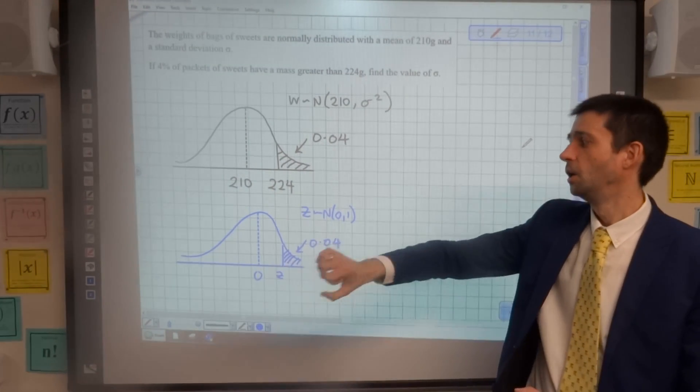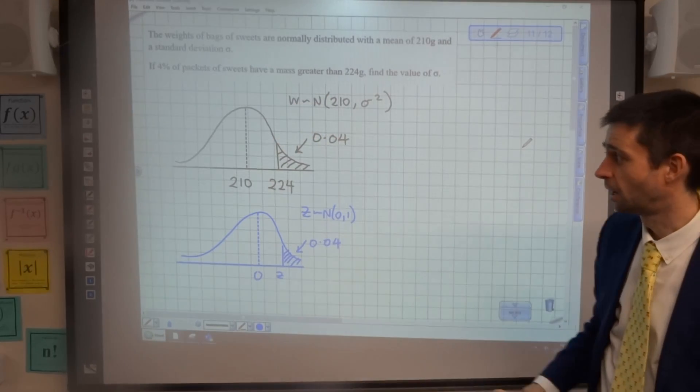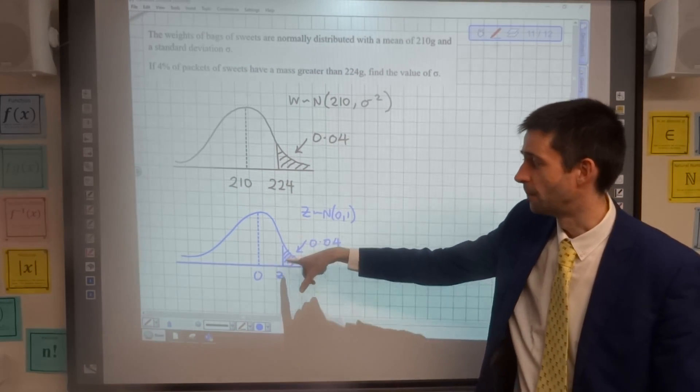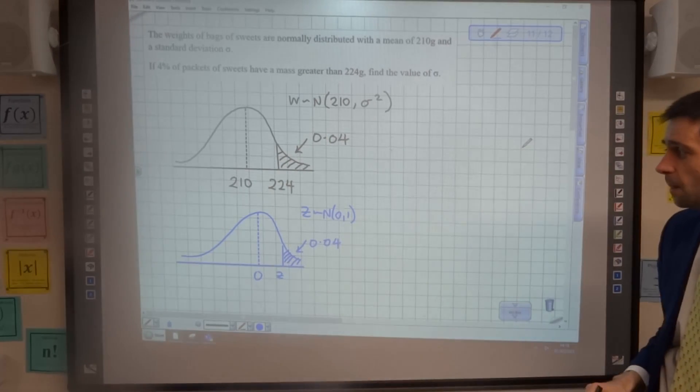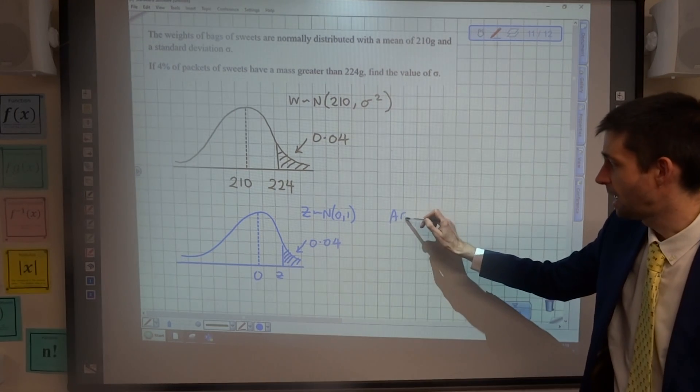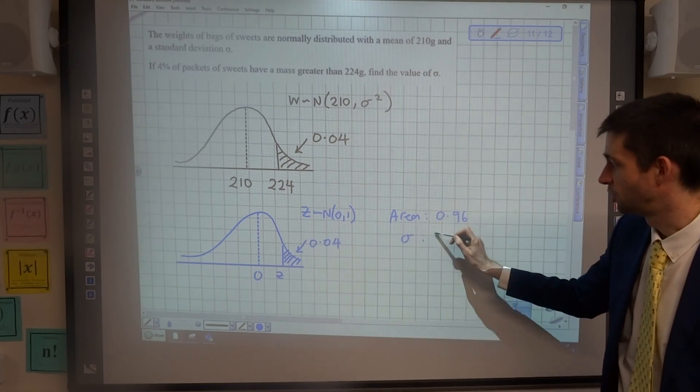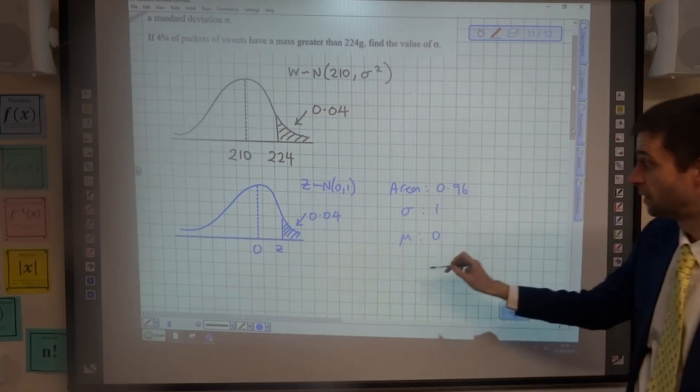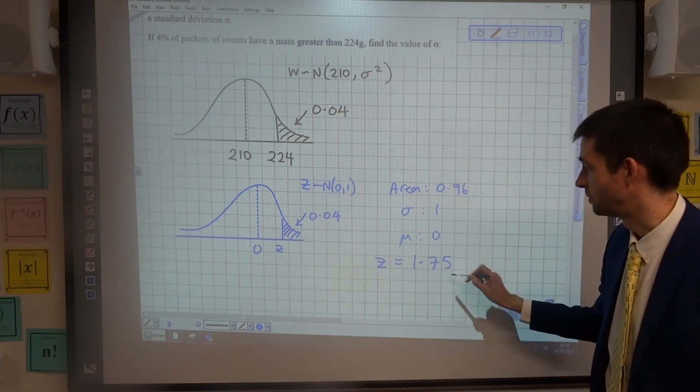I can find a value of Z which I can then use to find sigma for the first standard deviation because the probabilities will be the same for Z being how far it is above 0 as 224 is above 210. So if I go into the inverse normal function on the calculator now, the area that I'm going to have to tell it is 0.96, standard deviation 1 and mean 0, and the calculator tells me the Z value is 1.75.